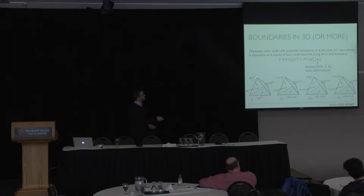So in practice, in three dimensions, if we have the color code on a tetrahedron, it would be equivalent to three almost decoupled copies of the toric code, and these three copies of the toric code are attached along the base.